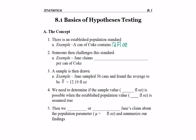Then somebody usually challenges, maybe sometimes they support, but whatever this fact is. So here, for example, Jane claims that there is more than 12 fluid ounces per can of Coke.